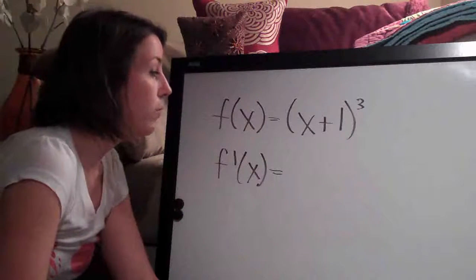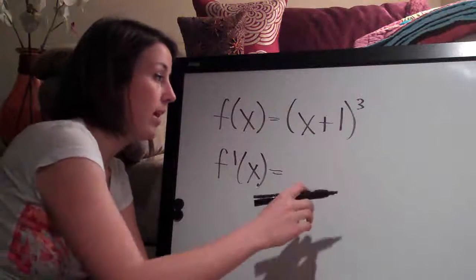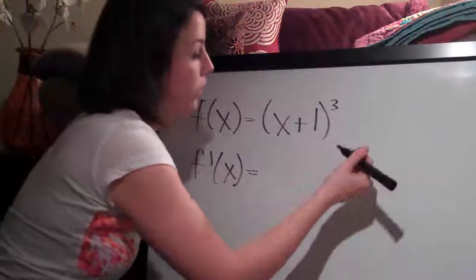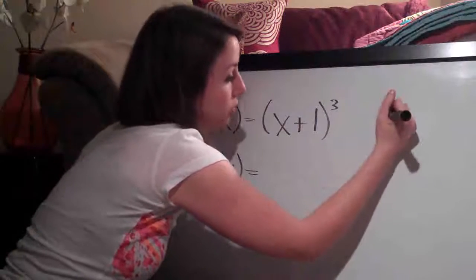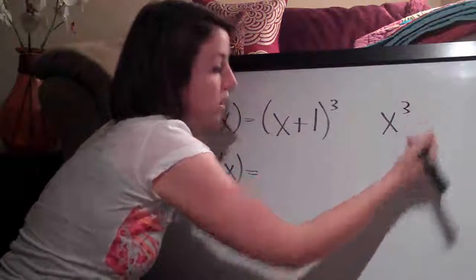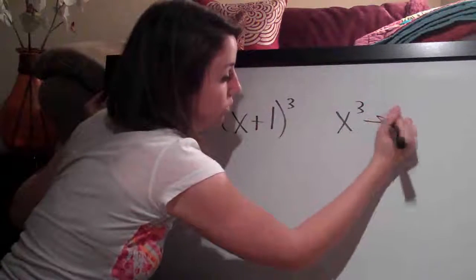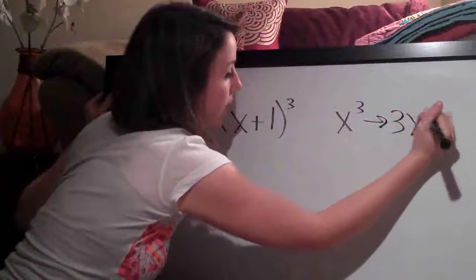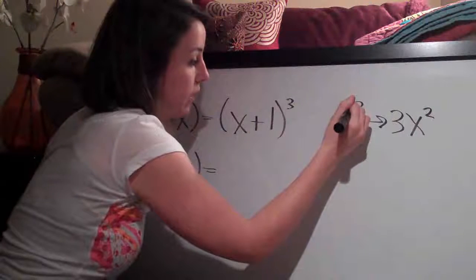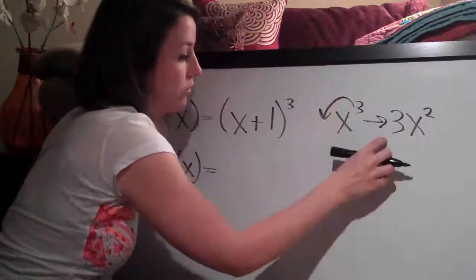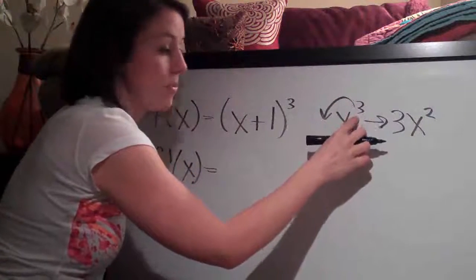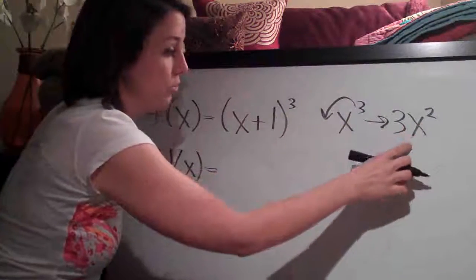So the way that we're going to do that is we know before, for example, if we were going to take the derivative of x cubed, the derivative of x cubed we know to be 3x squared. We bring the exponent in front here to the 3 and then we subtract 1 from the exponent and we get 2.